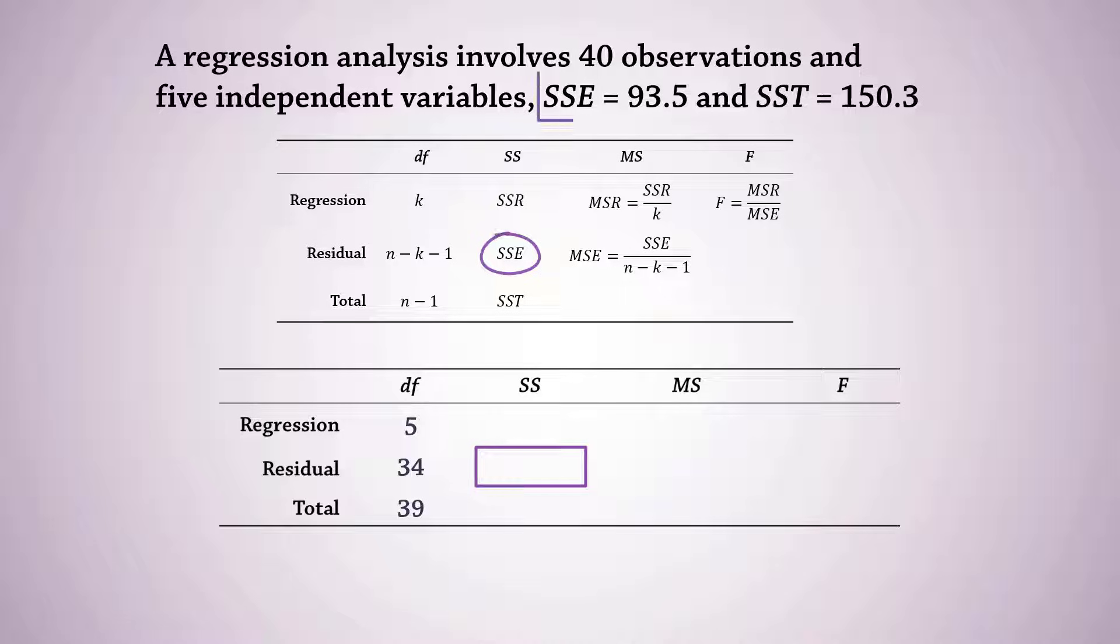We're given the unexplained variation SS residual or SSE to be 93.5 here. Total variation or SS total is given as 150.3. Thus, SS regression or SSR will be SST minus SSE, which gives 56.8.